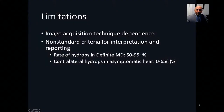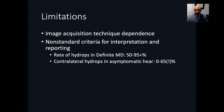However, there are limitations. There is significant technique dependence in image acquisition. The base sequence is 3D FLAIR or 3D phase-sensitive inversion recovery (real IR), requiring modifications not every MRI center can accomplish and demanding technical expertise. Furthermore, there are no standardized criteria for interpreting and reporting these studies. In the literature, the rate of hydrops in definite Meniere's disease ranges from 50% to 95%, reflecting variation in acquisition technique and reporting strategy. Contralateral hydrops in an asymptomatic ear has been reported from 0% to 65%—an eye-popping range reflecting significant variation in how studies are acquired and reported.